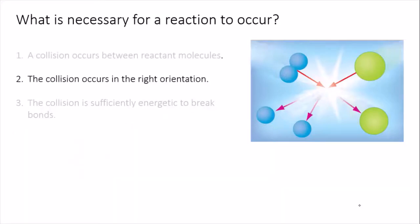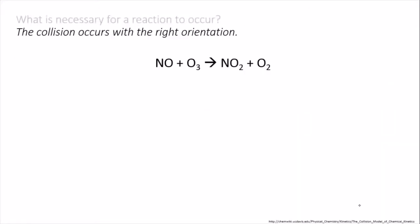Second, when they collide, the molecules have to collide in just the right way. What do we mean by just the right way? Well, here's an example. Nitrogen monoxide and ozone are able to react to produce nitrogen dioxide and oxygen. Essentially, the ozone is giving up one of its oxygen atoms to the nitrogen monoxide.